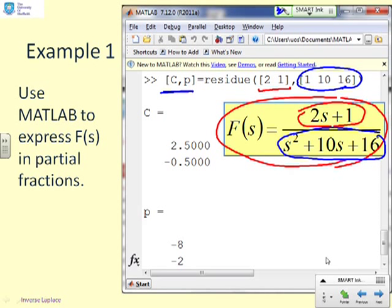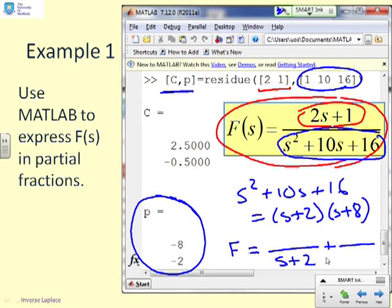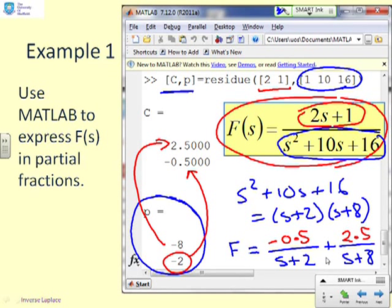I've then asked for my two outputs, and you remember the first output is the residues, and the second is the poles. Now, it may be obvious to you, I hope it's obvious, that s squared plus 10s plus 16 can be written as s plus 2, s plus 8. So you can almost see by inspection the poles are minus 2 and minus 8. And lo and behold, what do you see down here? MATLAB has told you I've got a pole at minus 8 and a pole at minus 2. So what I need now is the corresponding residues. You just match them up. So this minus 8 goes with the 2.5, and the minus 2 goes with minus 0.5. As easy as that.